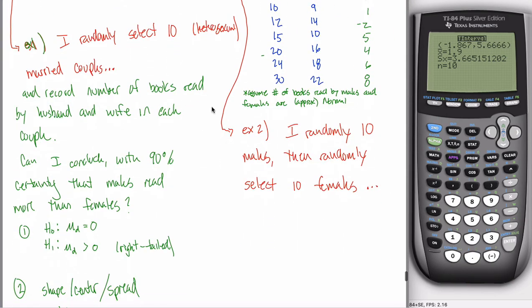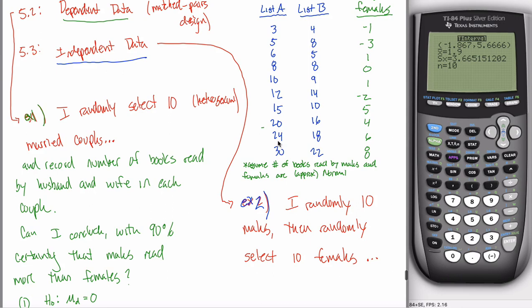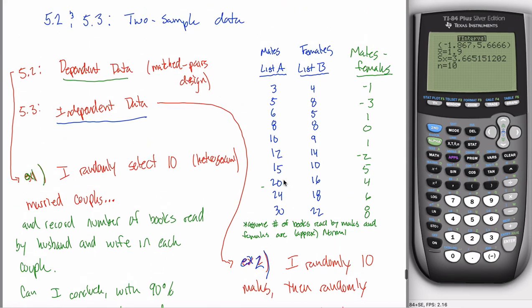And the way that could be given to you is kind of like what I have written here in example two. I don't know if that helped any, where I'm randomly selecting 10 males, then I'm randomly selecting 10 females. And there's no connection between the two. When I put this first male right here in this list, that doesn't mean that I have to put this female first in this list. Like this list could be in any order that I want. There's no inherent connection between the data. The data is independent.